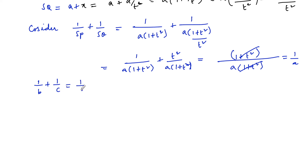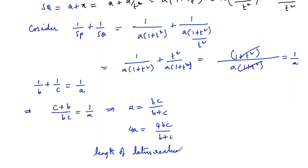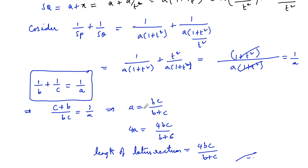So we can write (C + B)/BC = 1/a, which gives us a = BC/(B + C), and therefore 4a = 4BC/(B + C). So 4BC/(B + C) is the length of the latus rectum. Remember the key property: 1/B + 1/C = 1/a, which makes it easy to solve the problem.